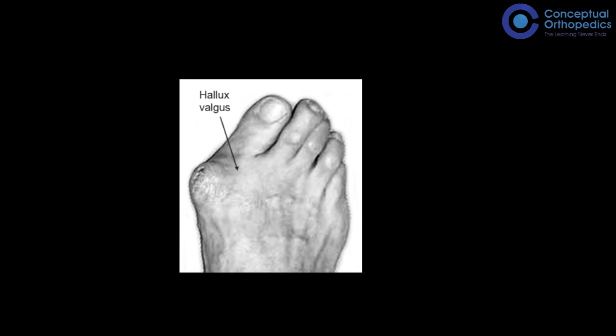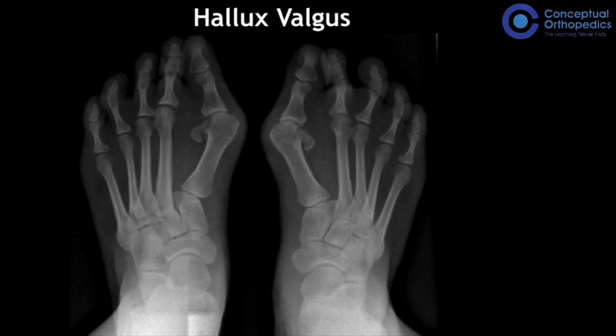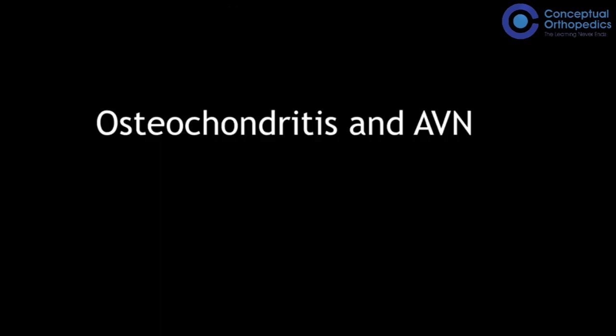Lateral deviation of the great toe is called hallux valgus; it can be bilateral and is very commonly asked about. Destruction of the cartilage with the underlying bone is osteochondritis, and death of bone due to poor blood supply is called avascular necrosis. Examiners can show you osteochondritis of various body parts.